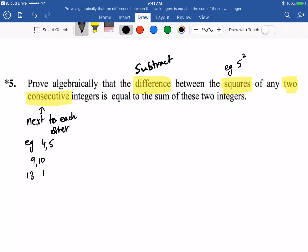Whereas 13 and 17, they are not consecutive because they're not next to each other. That's what it means.